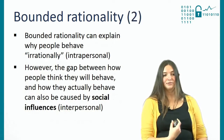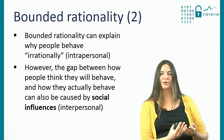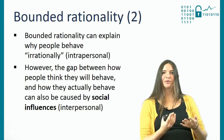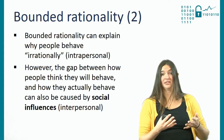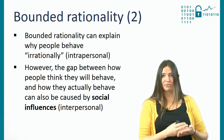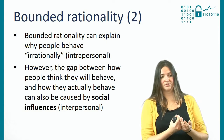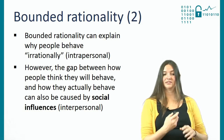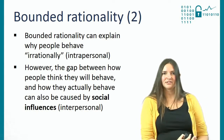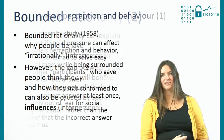Bounded rationality can explain why people behave irrationally. Everything discussed so far is about what happens internally — these are all intrapersonal processes. However, we don't live in a bubble; we live in a social world where we keep communicating and interacting with other people, and these people can influence our decisions as well. These are called interpersonal decisions, and they're influenced by social factors. To show how much of an impact other people can have on our decision-making, I'll give two examples from the social psychology literature.